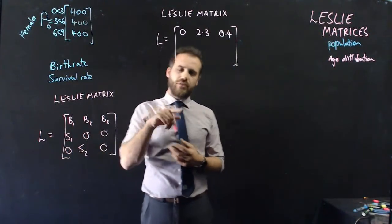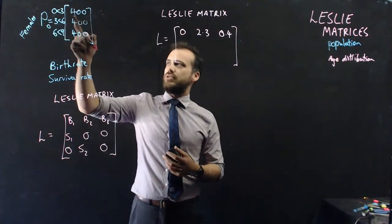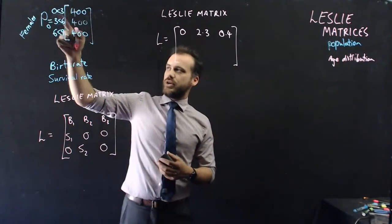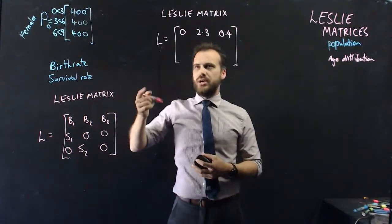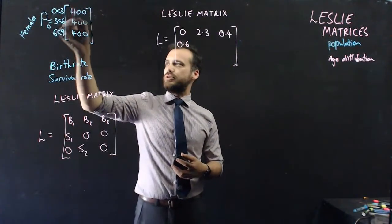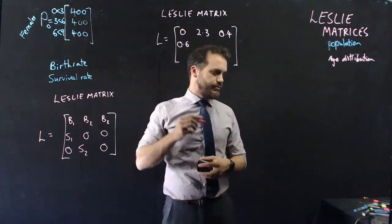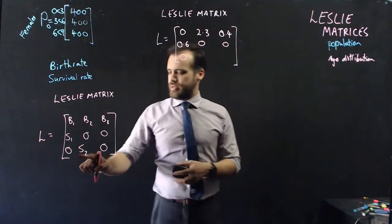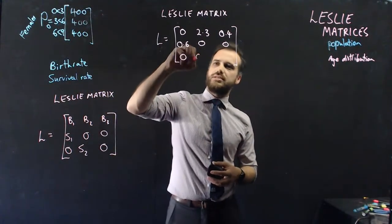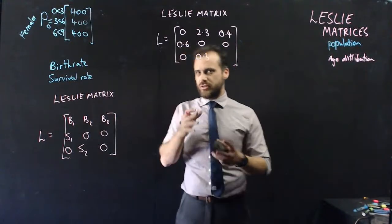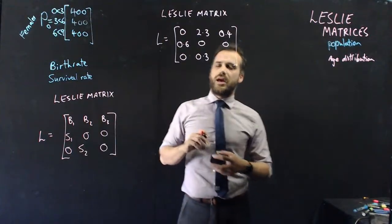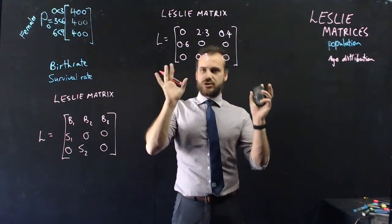Survival rate 1 is what percentage of the zero to three-year-olds survive the full three-year period to get into the next age class. We'll say 0.6, meaning 60% of these kangaroos survive to become three to six-year-olds. Survival rate 2 is the survival rate for the three to six-year-olds, and I'm going to put that as 0.3 — so only 30% of three to six-year-old kangaroos survive to become six to nine-year-olds. That is the construction of my Leslie matrix: birth rates 1, 2, and 3 in the top row, and survival rates 1 and 2 in the lower sub-diagonal.